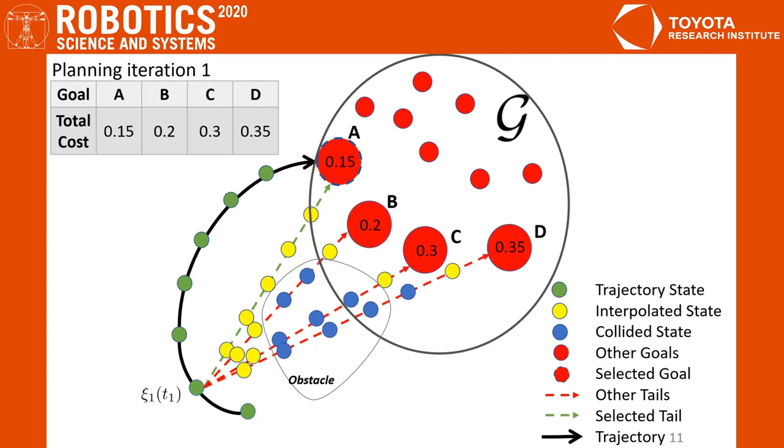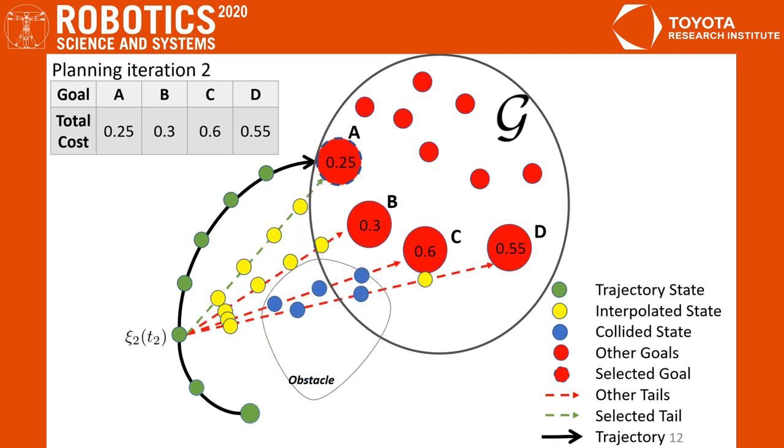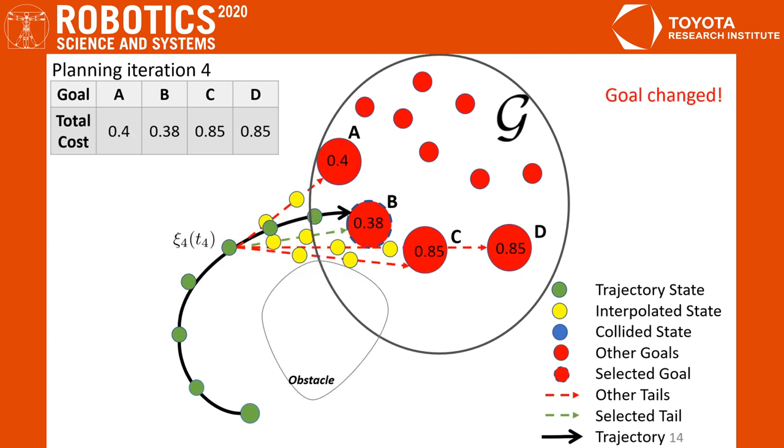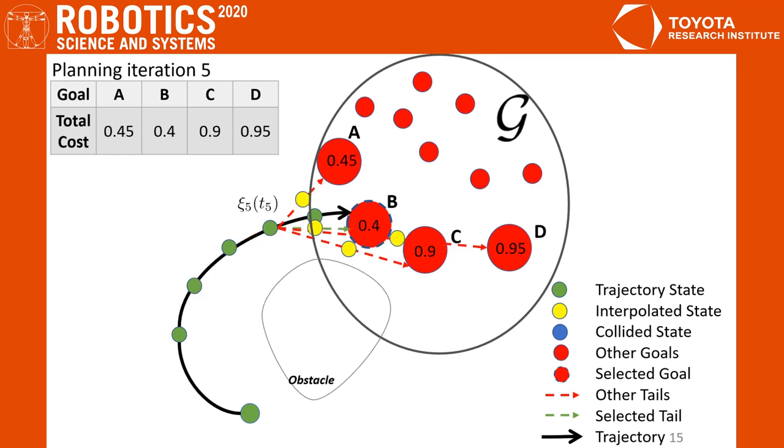This is iteration 1, iteration 2, iteration 3. At iteration 4, we switch to goal B, which has lower cumulative costs. Our algorithm often provides a scheduling that allows the planner to find a better goal. This is the last iteration.